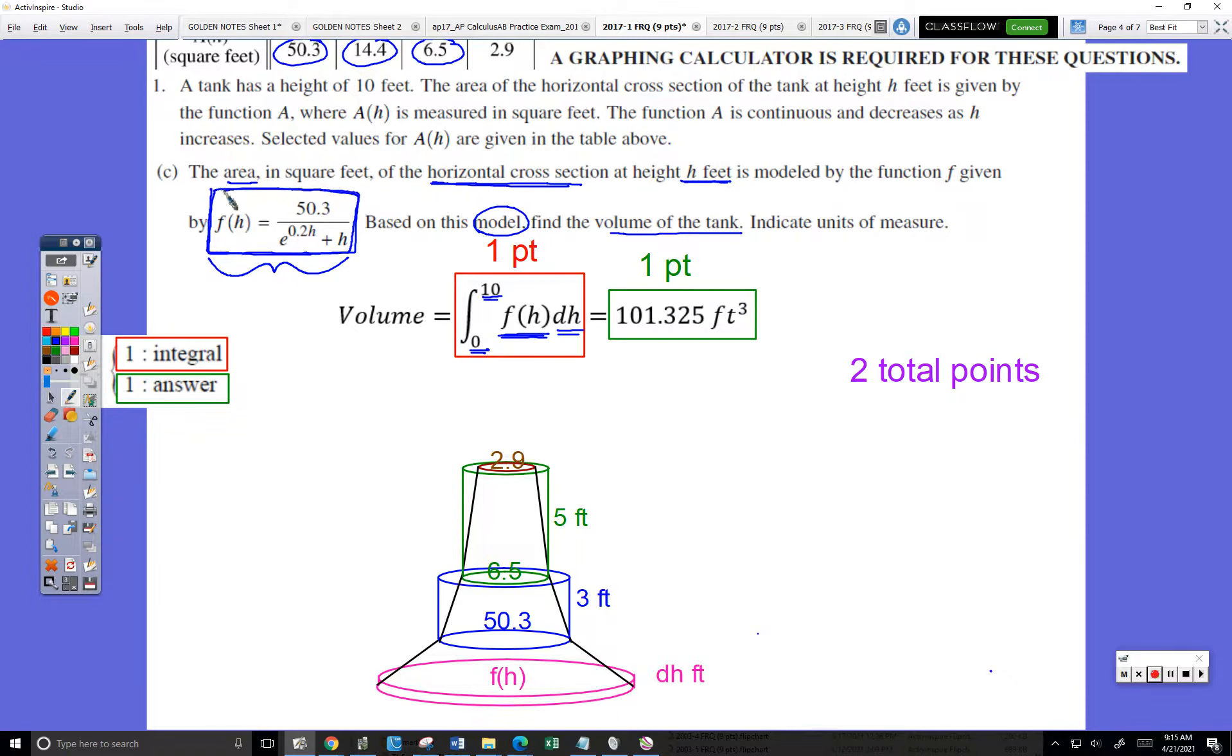So now instead of giving us just a few values for the area of each cross-section, they're giving us a formula where we can plug in any h and calculate the cross-section at that height.